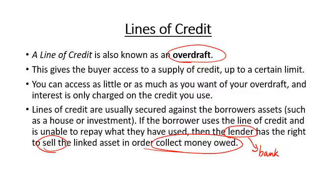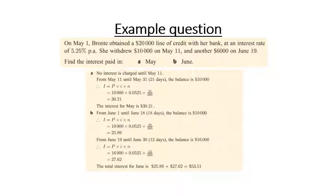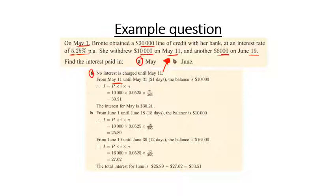Here's an example question on lines of credit. On May 1st, Bronte obtained a $20,000 line of credit with her bank at an interest rate of 5.25% per annum. She withdrew $10,000 on May 11th and another $6,000 on June 19th. The question asks us to find the interest paid in May. No interest is charged until May 11th because that was the first day she actually withdrew money on the line of credit.